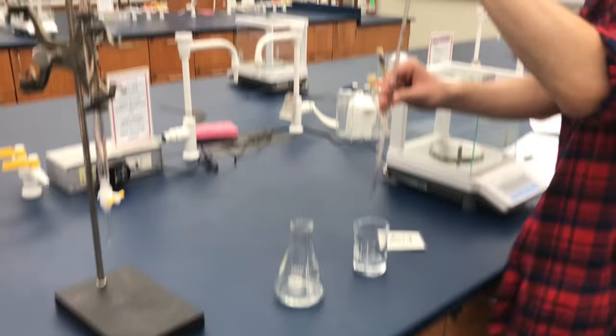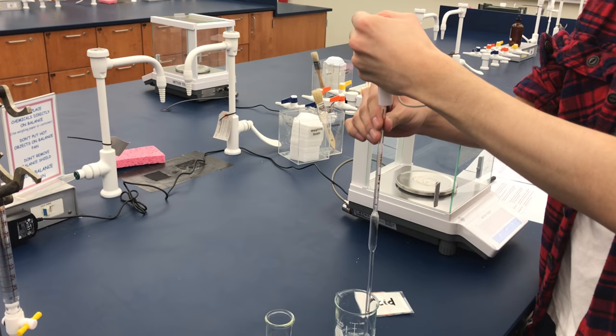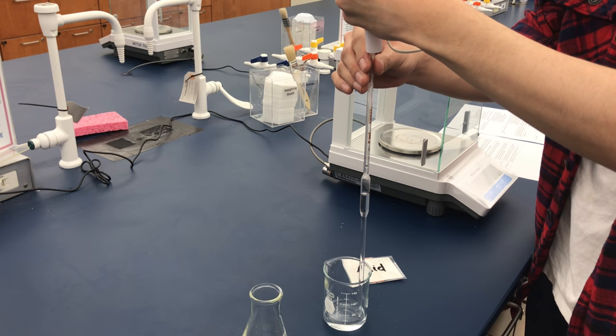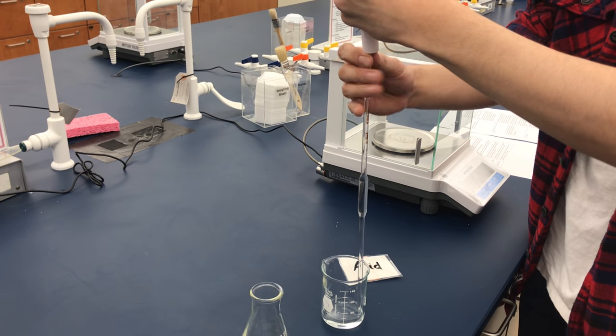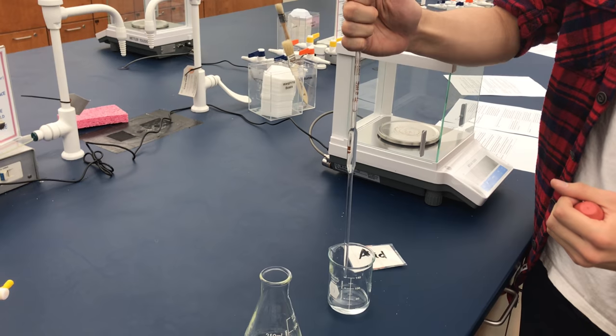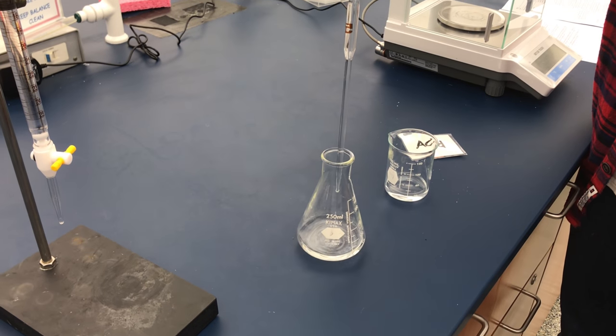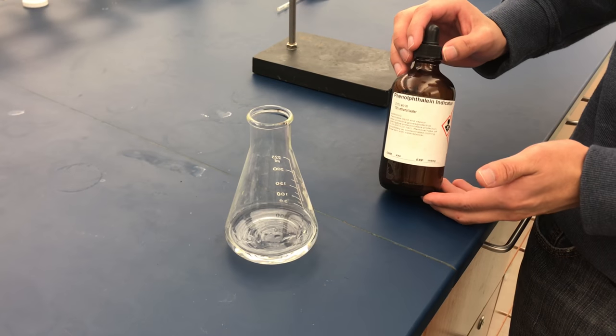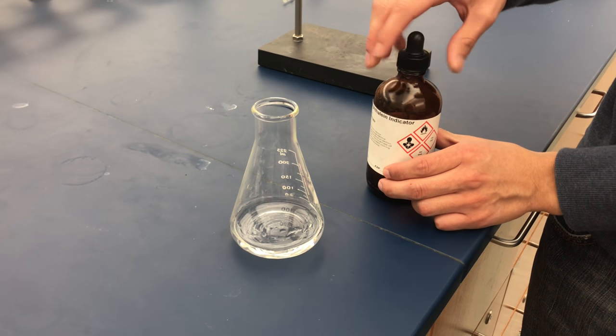Dispense a known volume of the unknown solution into the flask. Record this volume, then add one or two drops of indicator.